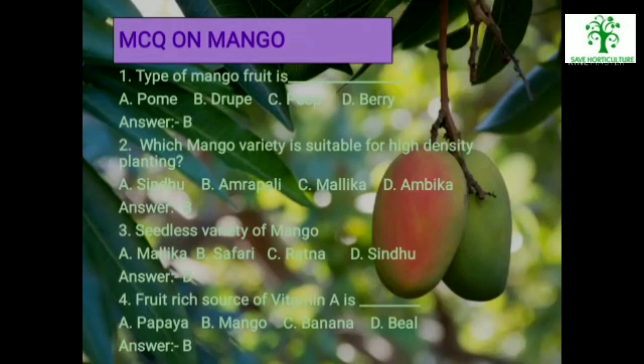MCQs on Mango — First: Type of mango fruit is: options are palm, drupe, pepper or berry. The answer is drupe. Second: Which mango variety is suitable for high density planting? Options are Sindhu, Amrapali, Malika or Ambika. The answer is Amrapali.